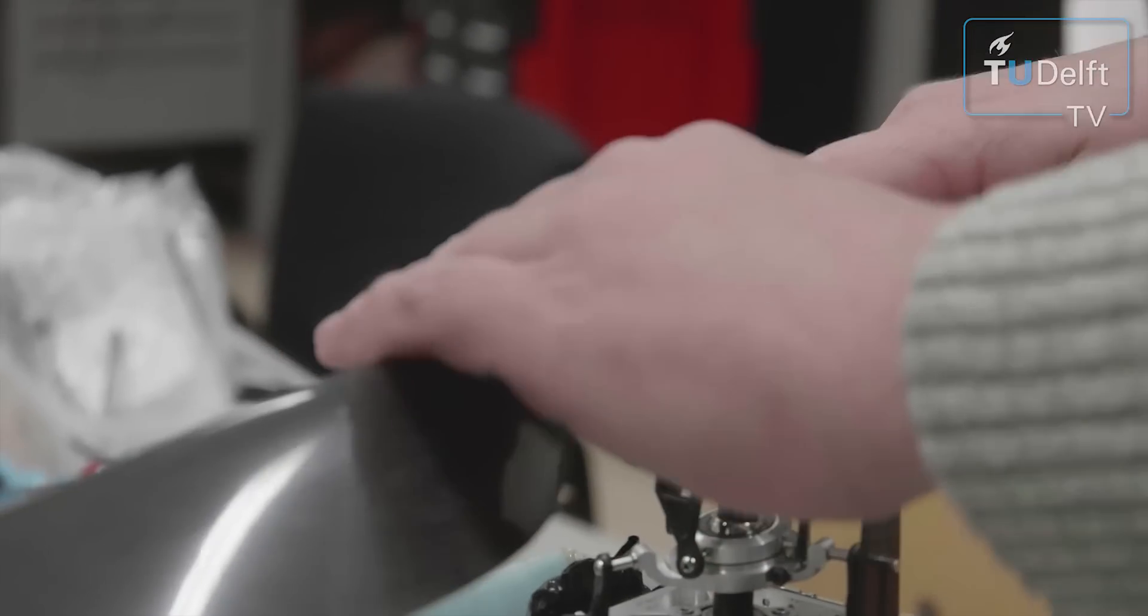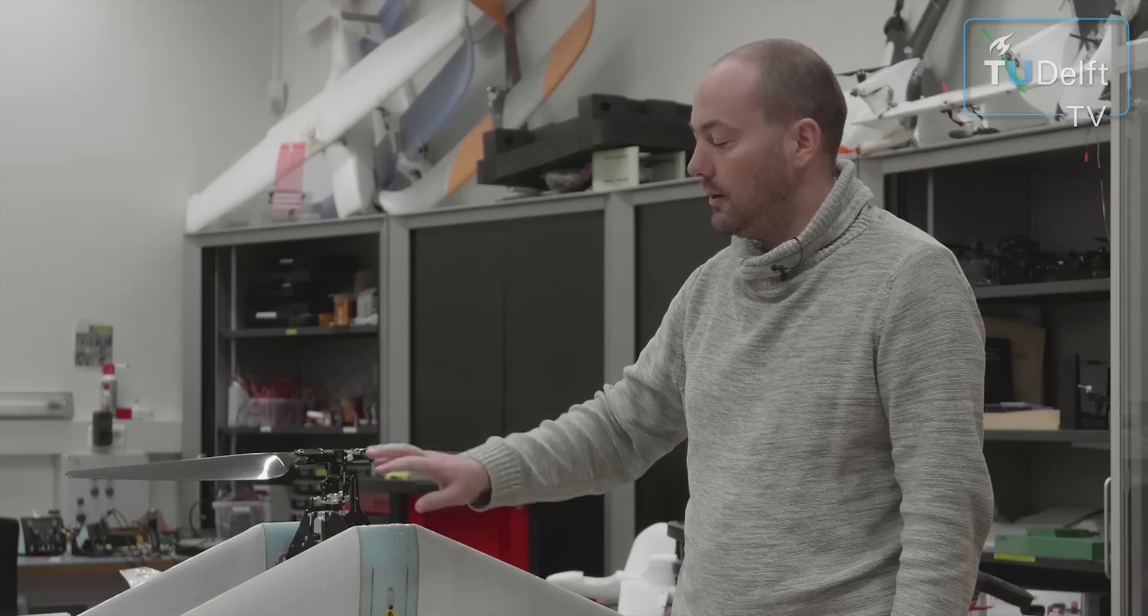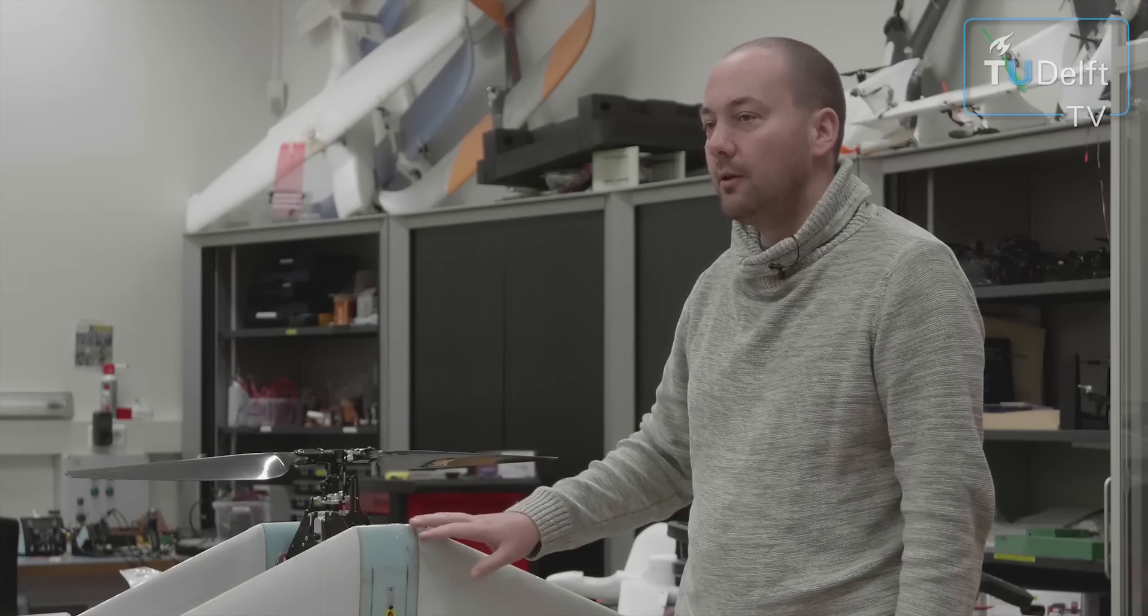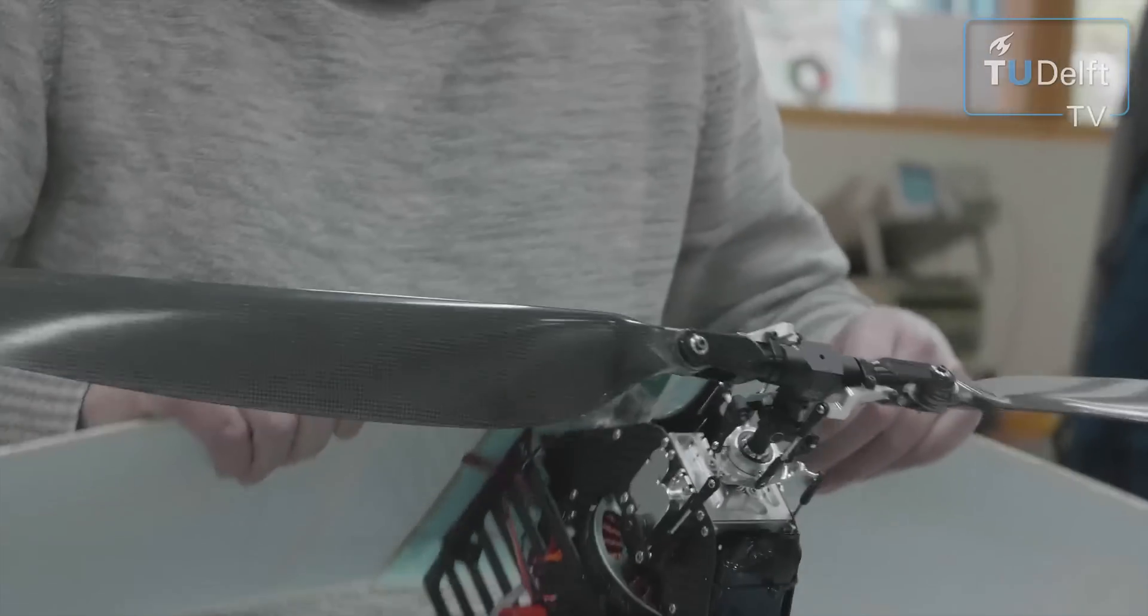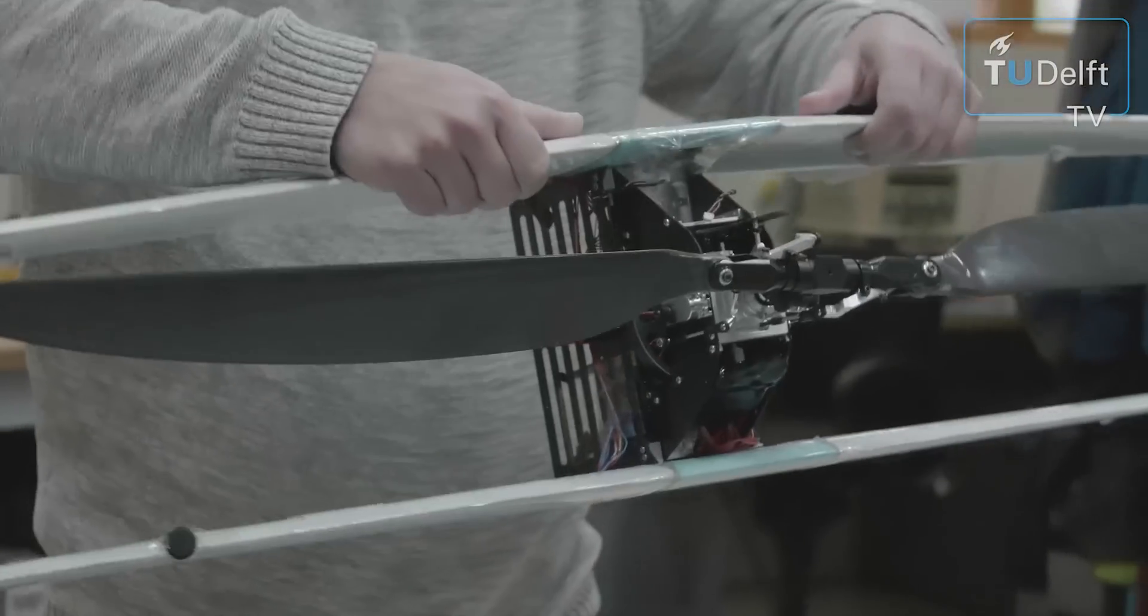So we have a complete helicopter swash plate here and put it in front of a delta wing, so we can take off like a normal helicopter and then we transition 90 degrees and now we fly forward like a normal airplane.